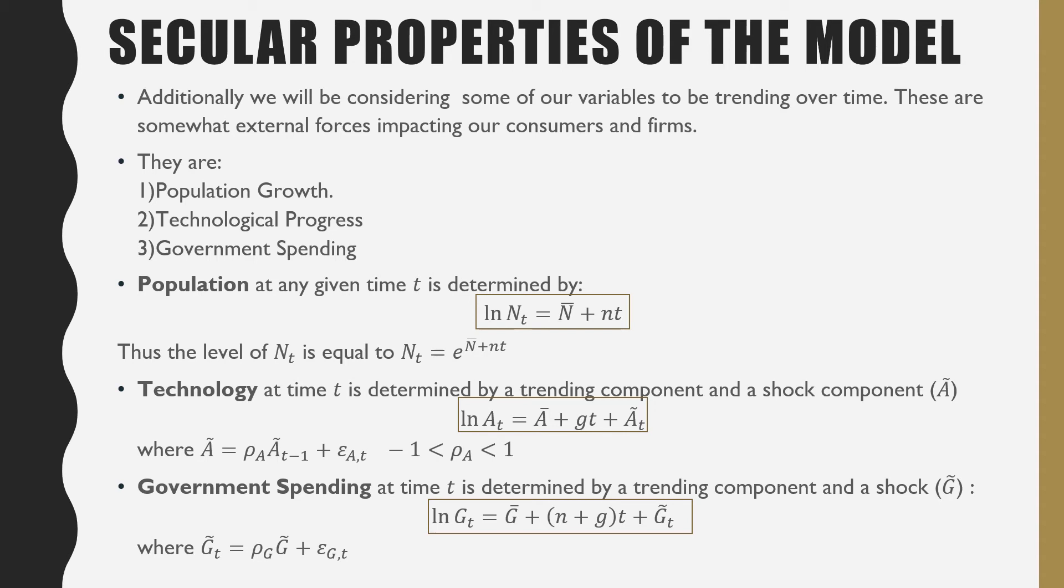Population at any given time t is determined by the following equation: ln N_t equals N̄ plus nt, which is the baseline population plus n times t, the population growth rate and period t. Therefore, the level at any given N_t is equal to e raised to the power of N̄ plus nt. So we're just exponentiating this equation to get rid of that natural log.